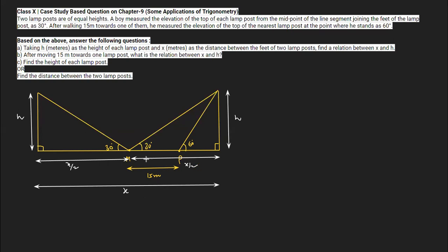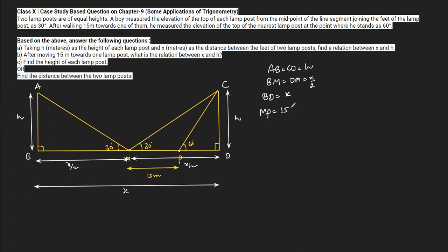Let me name the lampposts: this one is AB and the other is CD. We know that AB equals CD equals h. BM equals DM equals x upon 2, and the total distance BD equals x. The distance MP equals 15 meters as given. I think we are done with all the given information.